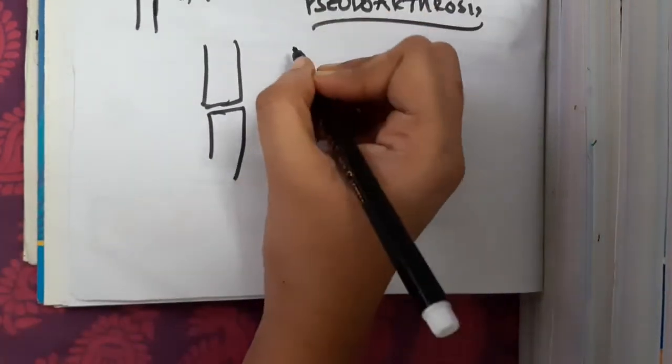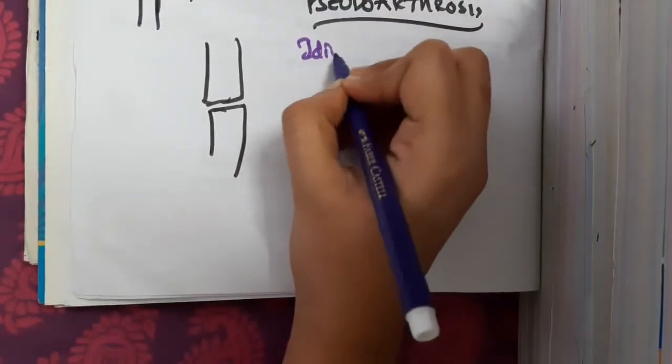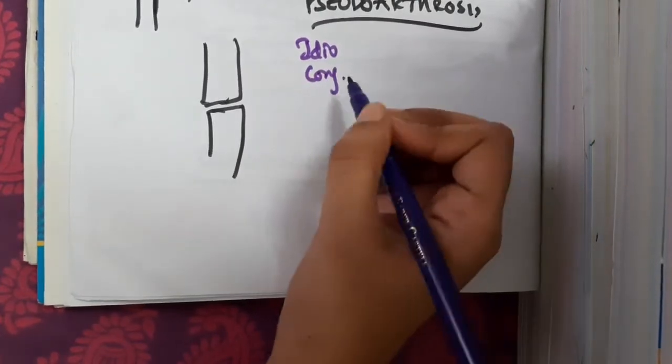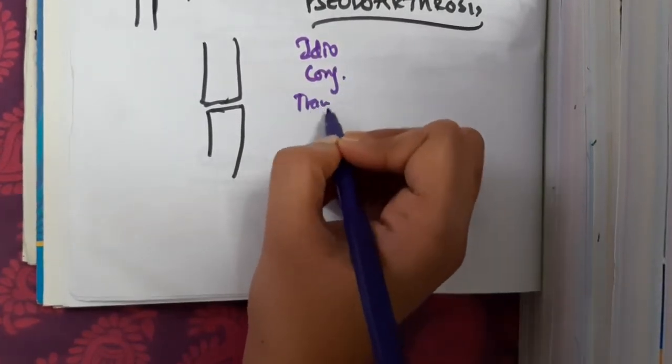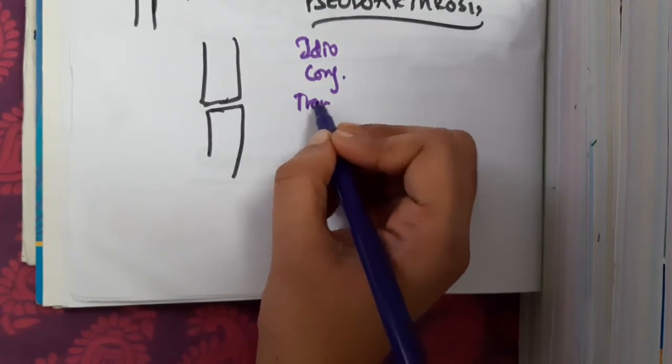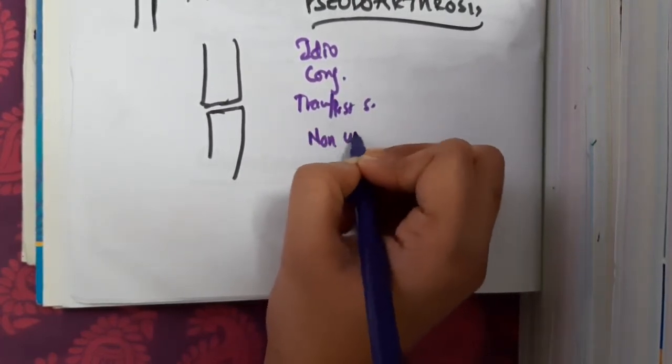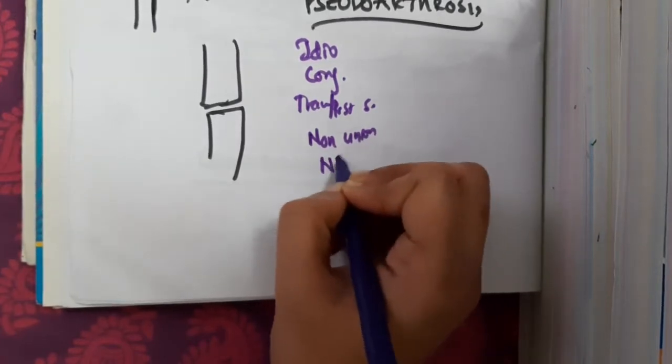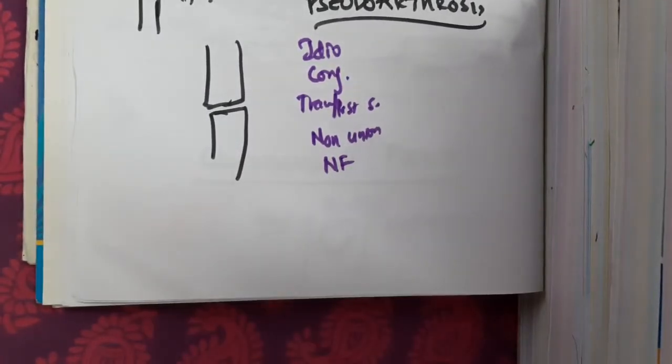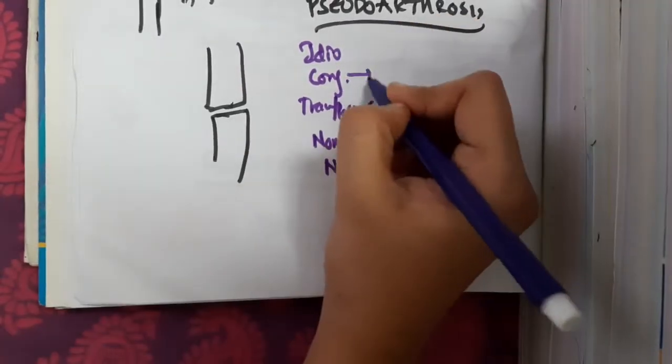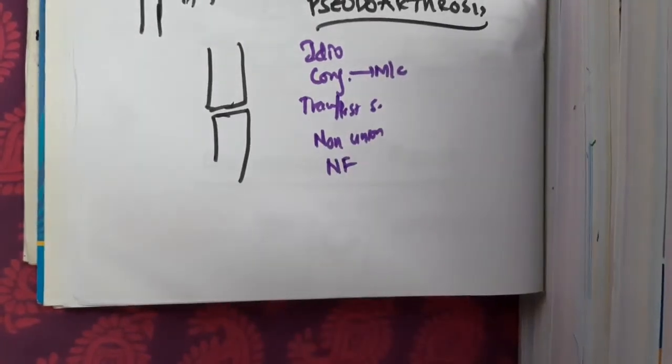There are many types of pseudoarthrosis: idiopathic, congenital, traumatic, or post-surgical. Sometimes it can occur due to non-union or in neurofibromatosis. Among all these, congenital pseudoarthrosis is most common.